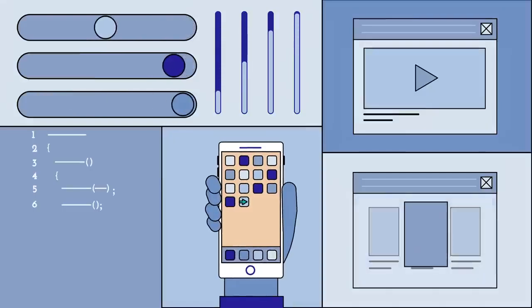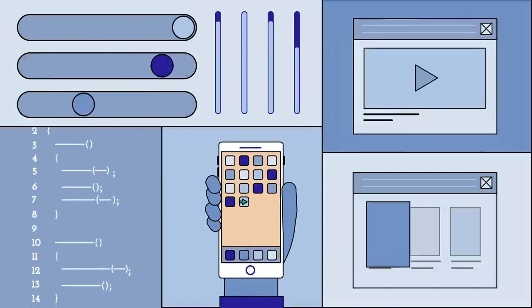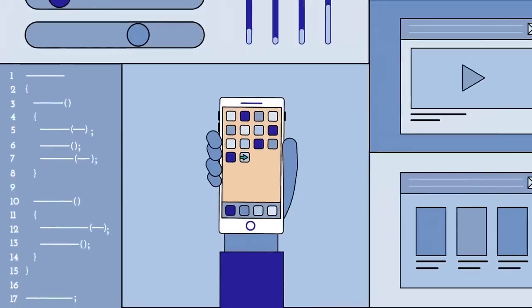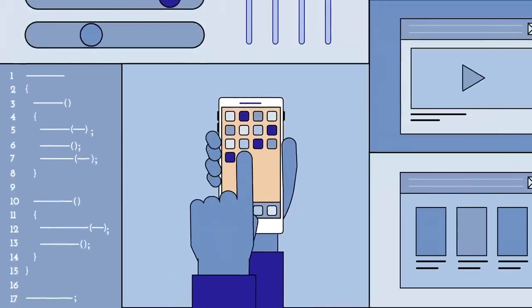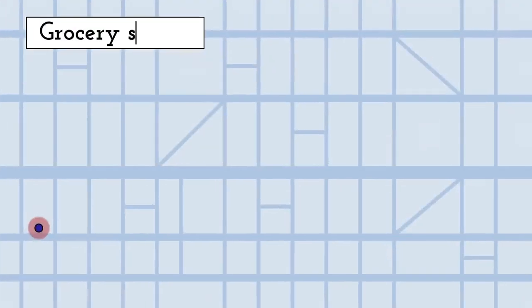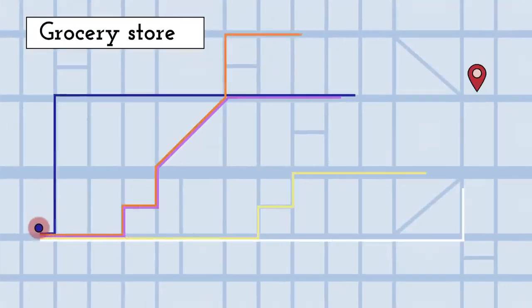Programs work in a similar way. Their code is made up of algorithms telling them what to do. Let's say that we want to use a navigation app to get directions. When we punch in a destination, the app uses an algorithm to look at the various available routes.